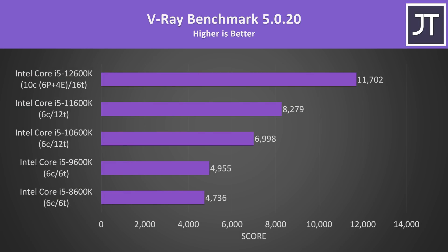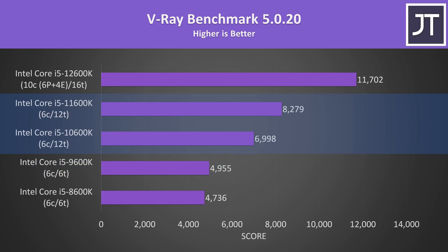The V-Ray benchmark is another heavy multi threaded rendering workload — once more only a very minor difference going from 8th to 9th gen. Going from the 8600K to the 9600K doesn't really seem worth it; maybe consider an i7 instead. 10th gen can offer a 41% boost over 9th gen due to the addition of hyper threading. Going up to 11th gen was still 18% higher than 10th gen, but then 12th gen was again 41% ahead of 11th gen.